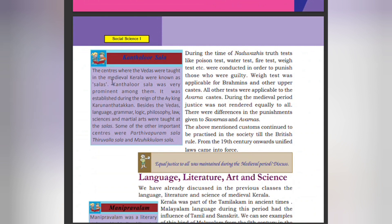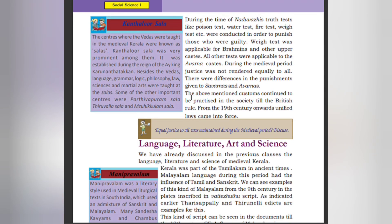The centers where the Vedas were taught in medieval Kerala are known as Salas. Kandala Shala was very prominent among them; it was established during the reign of high king Karundanakan. Besides the Vedas, language, grammar, logic, physiology, philosophy, law, sciences, and martial arts were taught at the Salas. Some other important centers were Parthivapuram Sala, Thiruvalaa Sala, and Murikulam Sala. During the time of Naduvalis, truth tests such as poison test, water test, fire test, and weight test were conducted to punish the guilty. The weight test was applicable for Brahmins and upper castes; all other tests were applicable to the Avarna caste. Justice was not rendered equally to all during the medieval period.